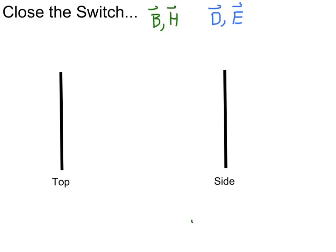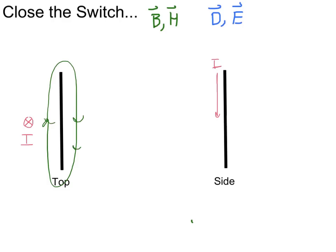Let's look at what happens when we flip that switch and turn the current on. From the top view, we're going to have a current rushing down into the screen. From the side view, the current is going to flow downward. We know that whenever we have a current, it creates a magnetic field that surrounds the current — that's Ampere's law. Using the right-hand rule with my thumb pointing into the screen in the top view, the magnetic field is going to go around clockwise. I'm labeling magnetic fluxes and fields in green, and electric fluxes and fields in blue.